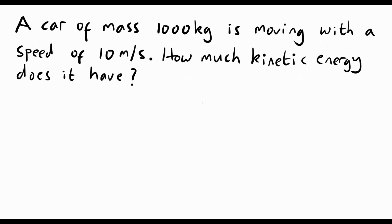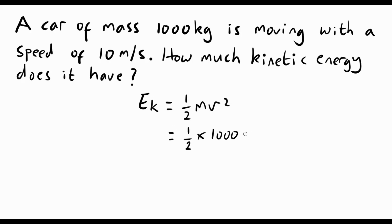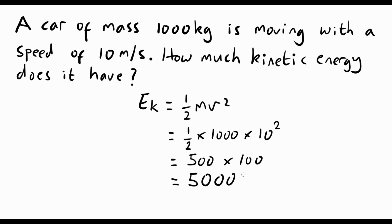Here's a question that uses that equation: a car of mass 1000 kilograms is moving with a speed of 10 meters per second — how much kinetic energy does it have? We start by writing the equation: kinetic energy equals a half m v squared. Putting the numbers in: a half times 1000 times 10 squared. A half times 1000 is 500, and 10 squared is 100, so the answer is 50,000 joules of kinetic energy.